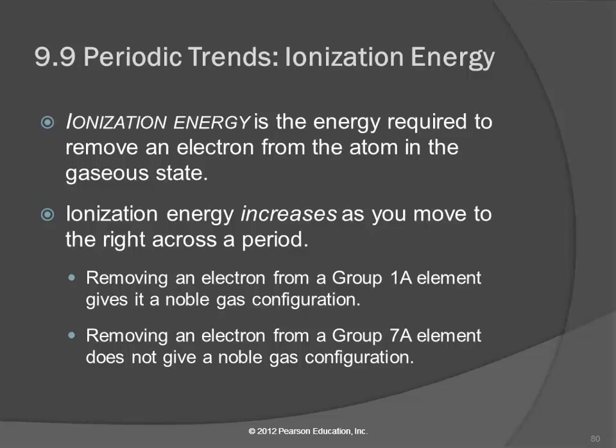So removing an electron from a group 7 does not give it a noble gas configuration. So when you're comparing within a row like sodium and chlorine, sodium has the lower ionization energy - it's a lot easier to take its electron - and chlorine has the higher.